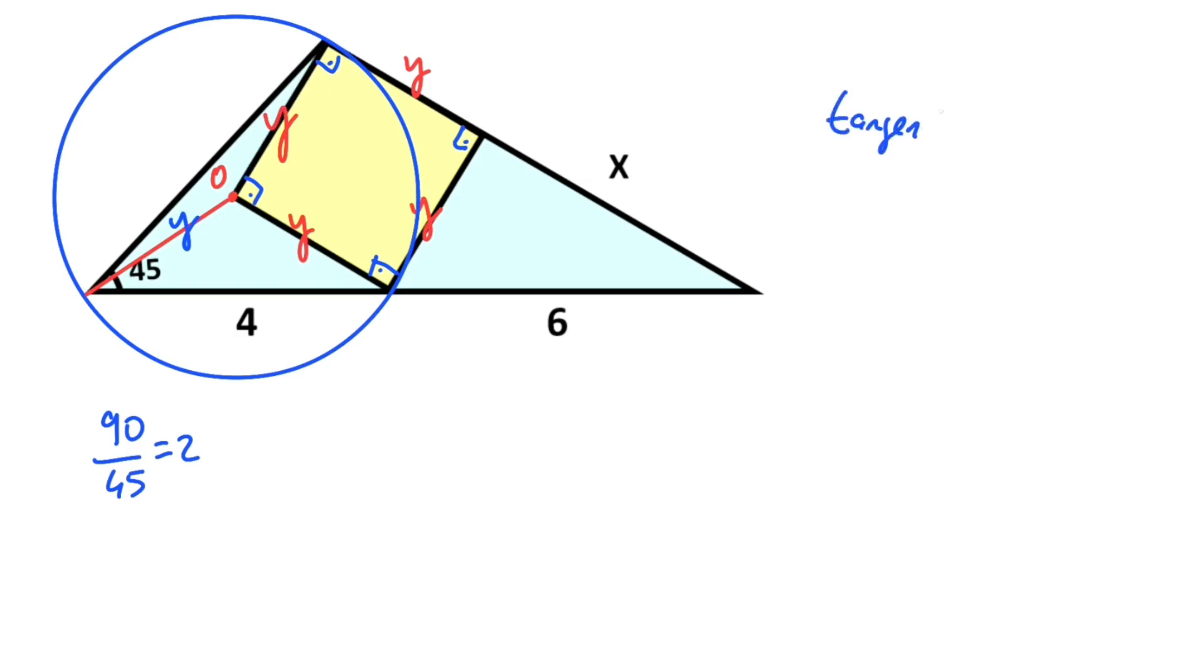Therefore, if we apply tangent-secant theorem, the square of this length (x + y) squared equals the first part, 6, times the second part, 10. If we square root both sides of the equation, x + y must be equal to root 60.